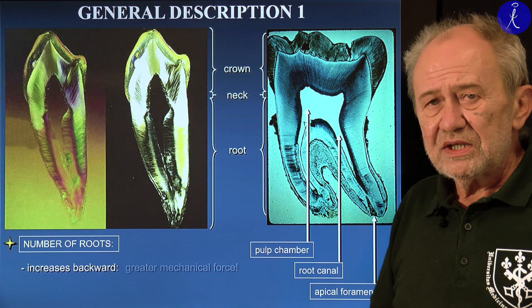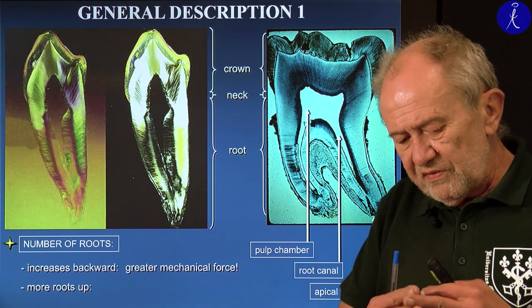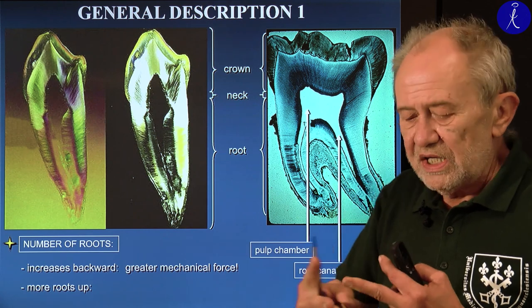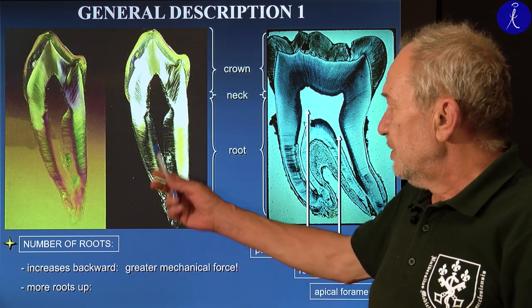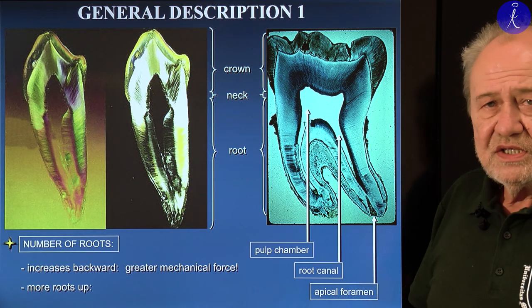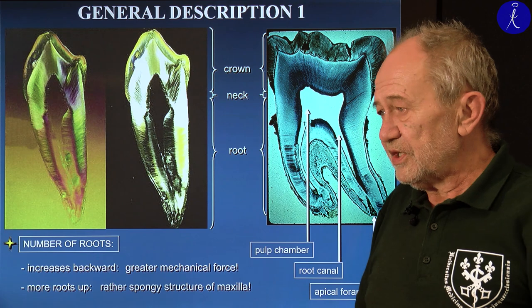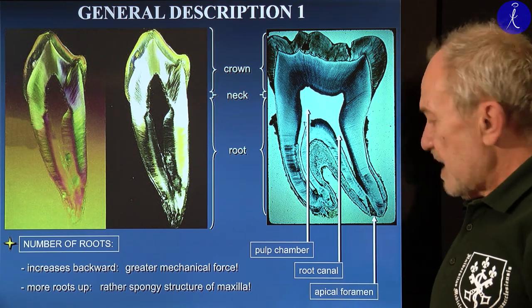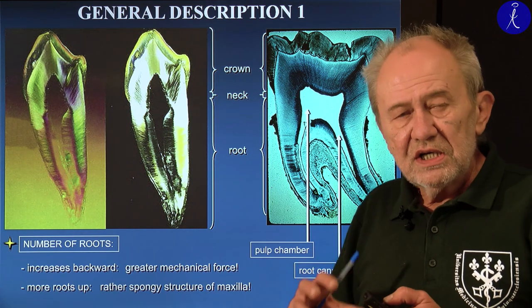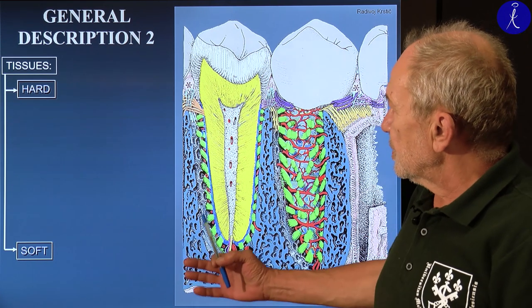This is because bigger mechanical forces act posteriorly. Like using scissors — at the tip there is little force, but closer to the axis, much more force can be achieved. Another general rule: the corresponding teeth in the upper row always have one more root. This is because the mandible has an extremely compact structure, while the maxilla is made of spongy bone, so more anchoring is needed to keep upper teeth in position.